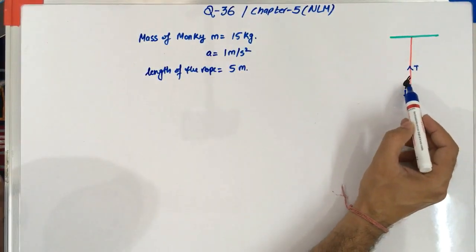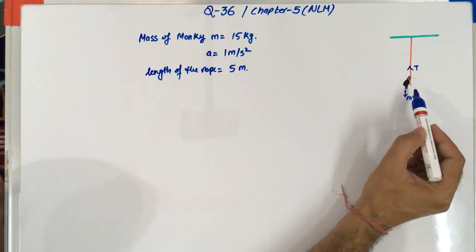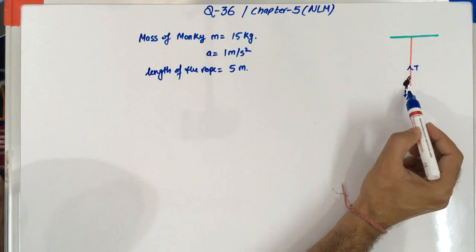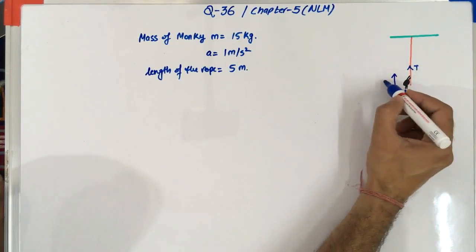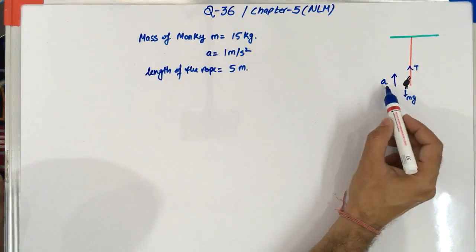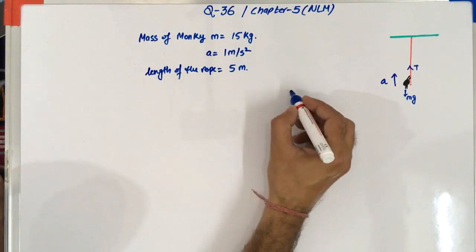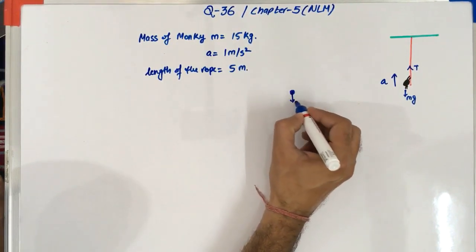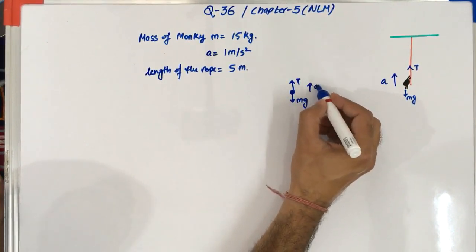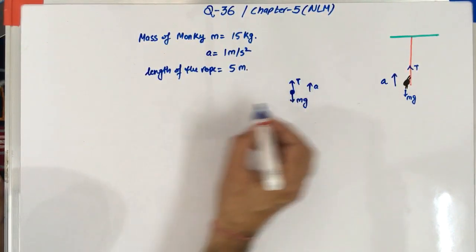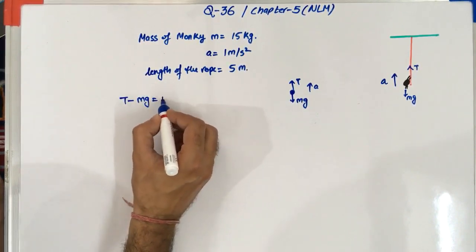So first of all we will try to observe. So this is nothing but a simple motion where the monkey is trying to climb up and there is a force acting downward direction. And the acceleration required in the upward direction which is A. So we will create a FBD of this monkey and from that say this is a monkey and the mg force downward. T is upward and the acceleration is also in upward direction. So the equation of motion will become T minus mg is equal to ma.